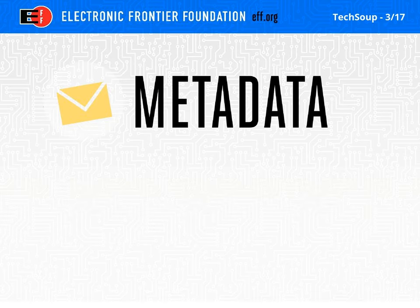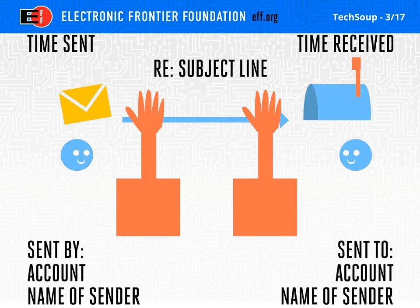What is metadata? In this example, metadata is the time that that email is sent, the subject line, the time received, the name of the sender, and the name of the recipient. All that data is still accessible even if encryption is used.